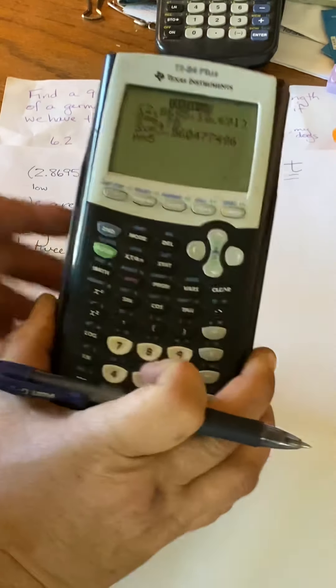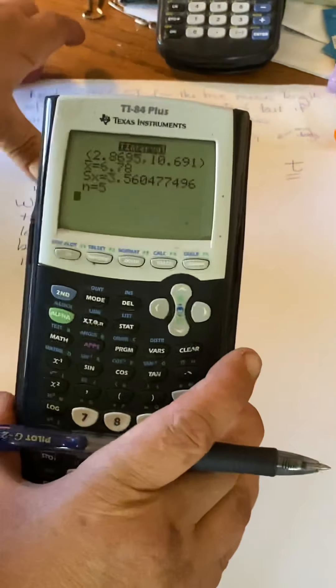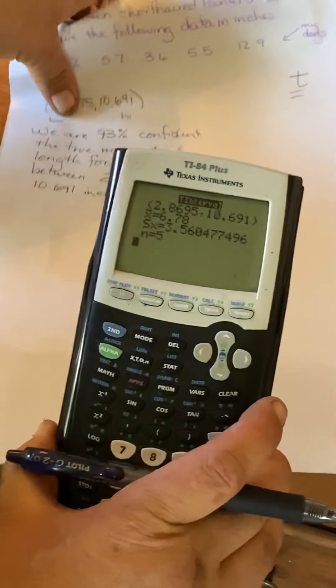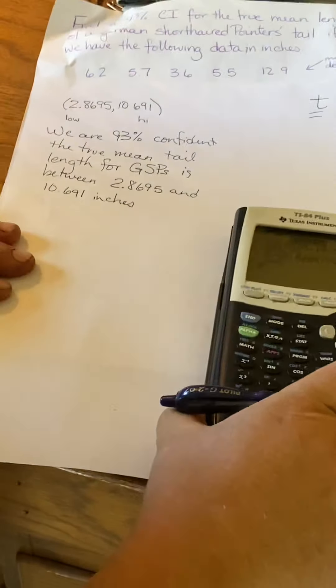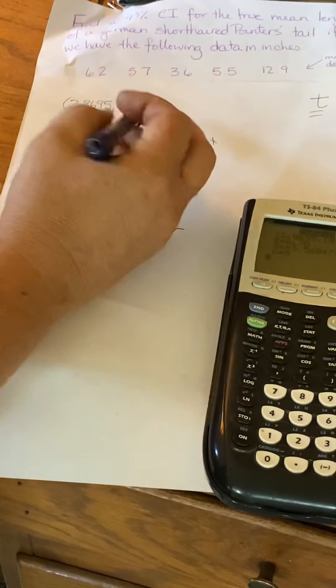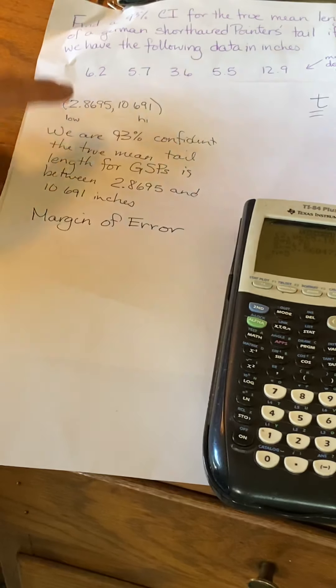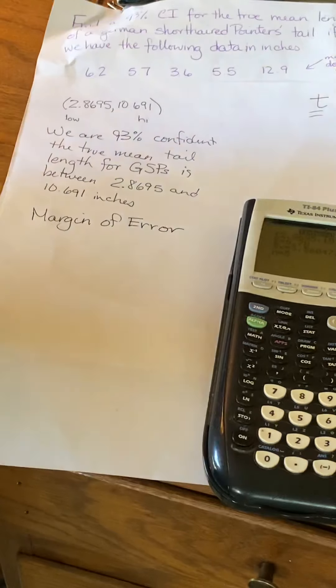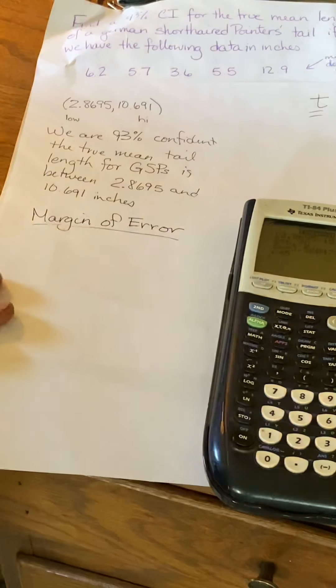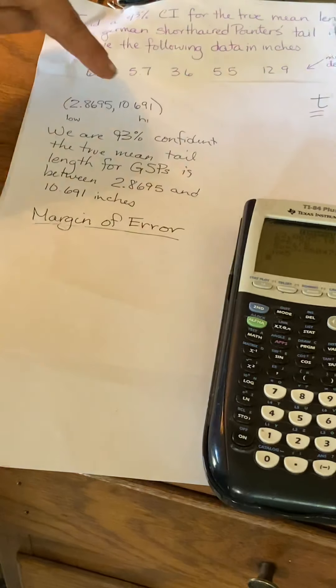Now, there is one problem with this. When the calculator does all the calculations for us, it does not give us the margin of error. So if we need the margin of error, now remember the margin of error is that middle step that I always ask you to show. So here, there was no work to show because we did it in the calculator. So because we did it in the calculator, we got our answer, we write our sentence, we're done. But what if we wanted the margin of error?